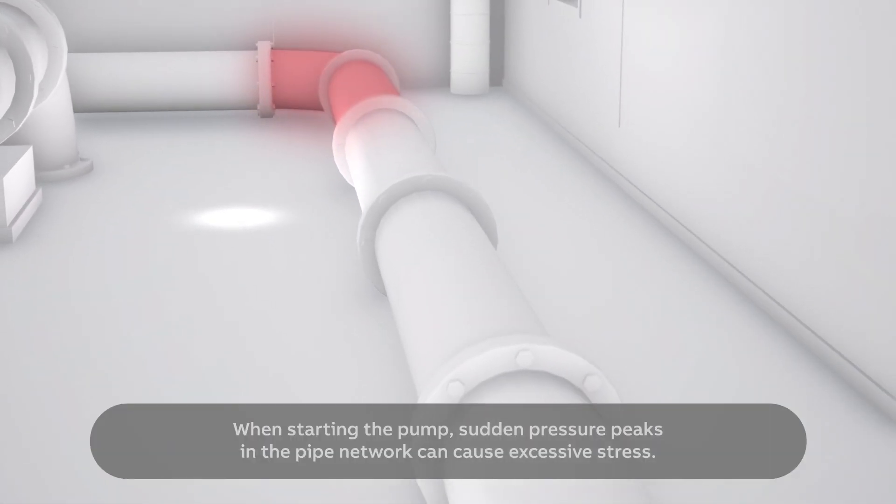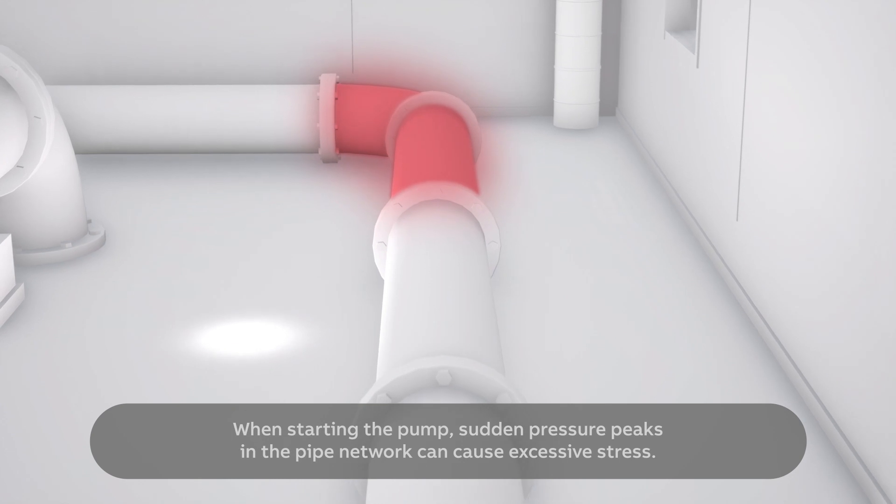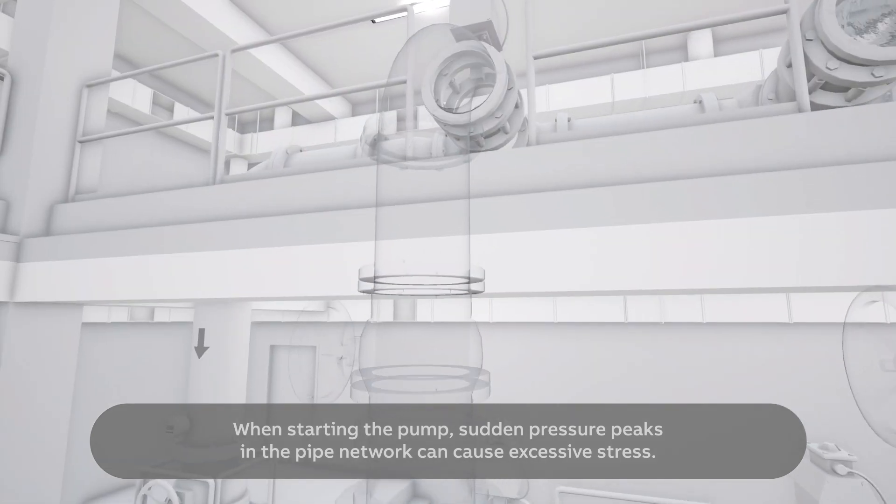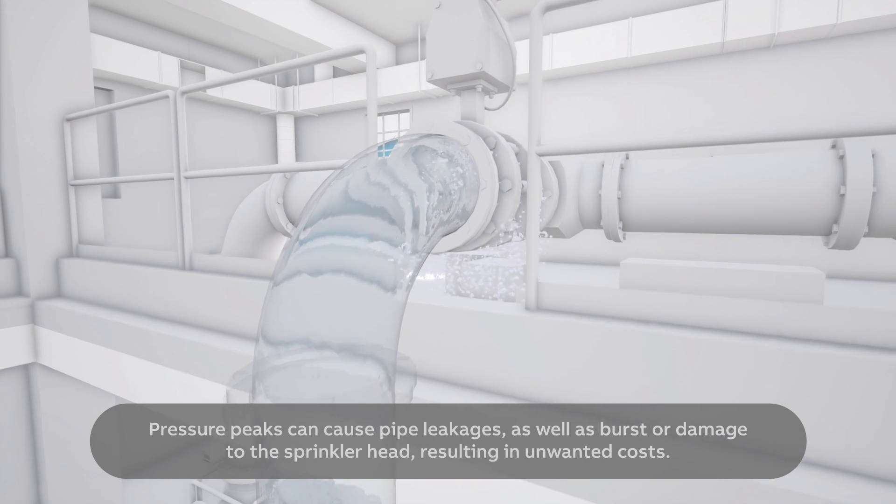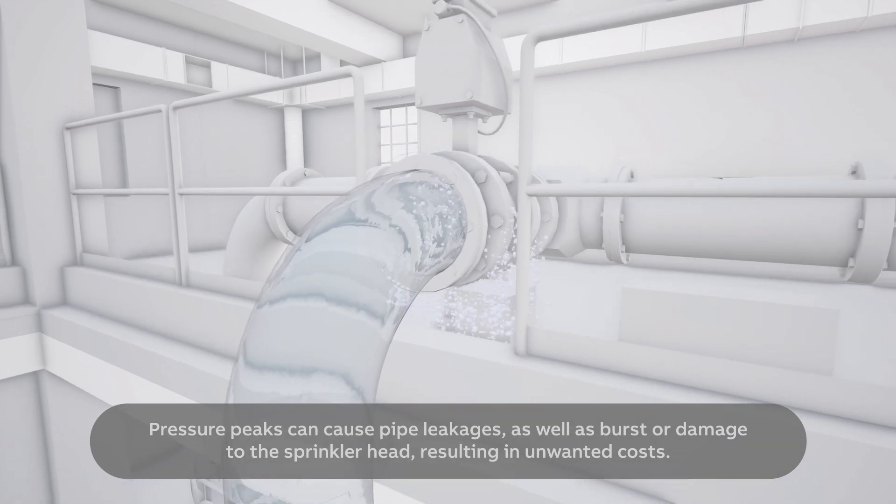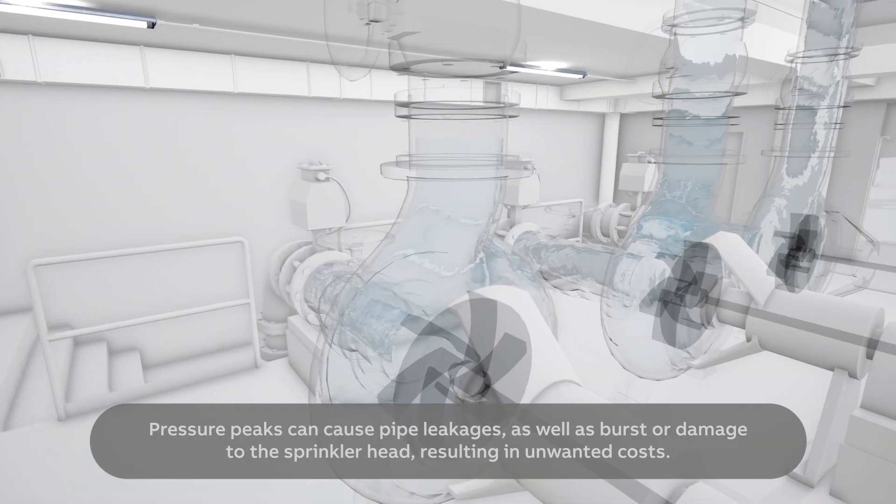When starting the pump, sudden pressure peaks in the pipe network can cause excessive stress. Pressure peaks can cause pipe leakages as well as burst or damage to the sprinkler head resulting in unwanted costs.